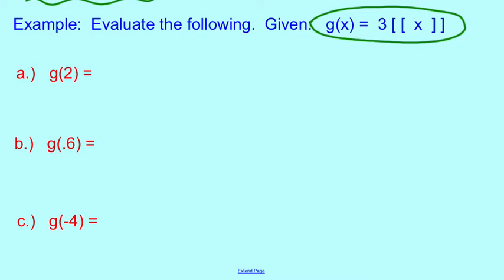Let's start with part A. We want to evaluate it for g of 2. We're going to substitute 2 in here, so we say 3 and then sub in our 2. We work inside out. The step function evaluation of 2, that already is an integer, so we don't have any rounding to work on. That's 2. Now we multiply it. 3 times 2 is 6, so the value of g of 2 equals 6.